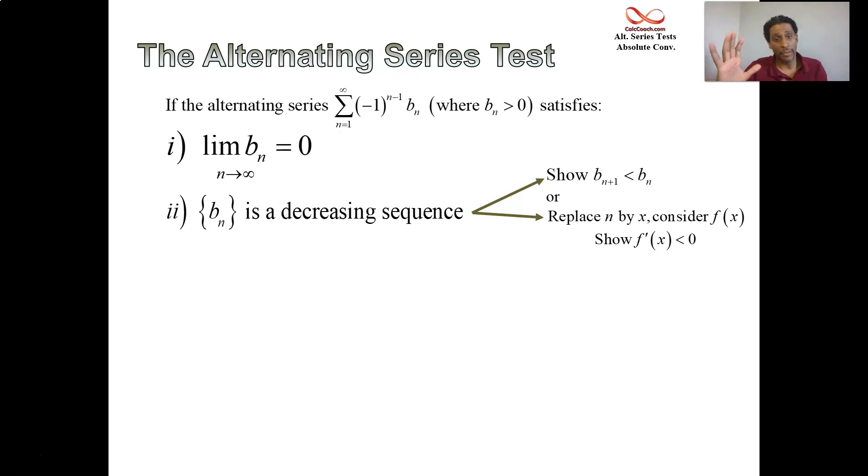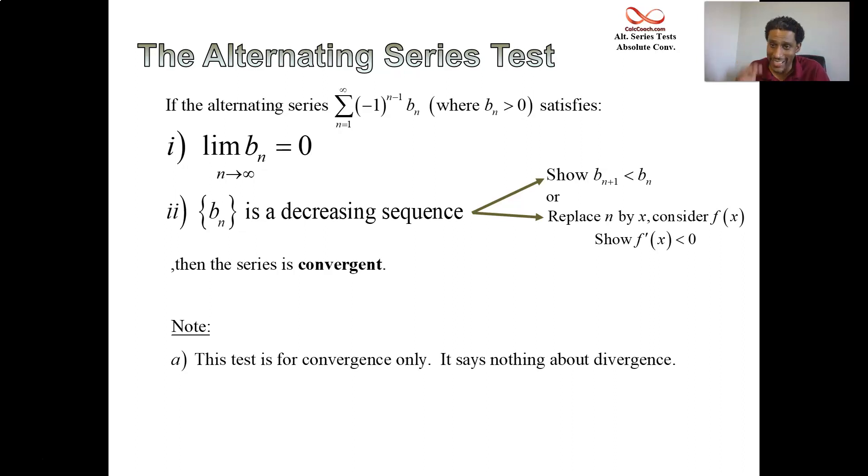If your alternating series has a b_n term that satisfies these two properties, we can say that the series is convergent. There's nothing to say that the series is divergent with this particular test. If you can't show these two parts, that doesn't mean that it diverges. This test is for convergence only. It says nothing about divergence.